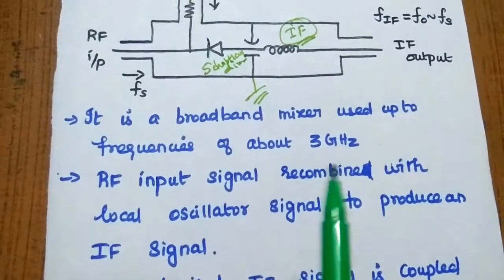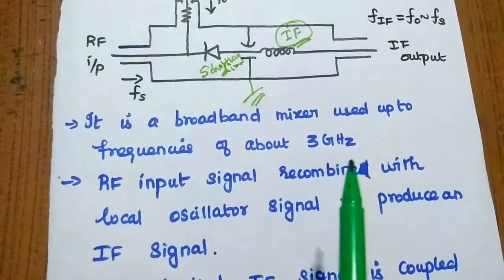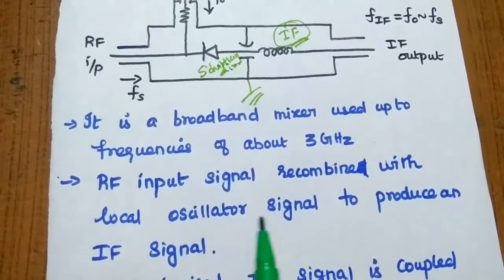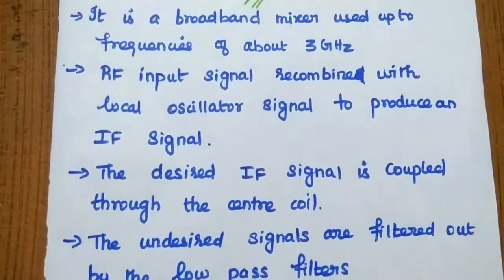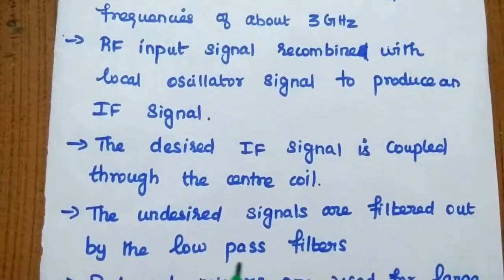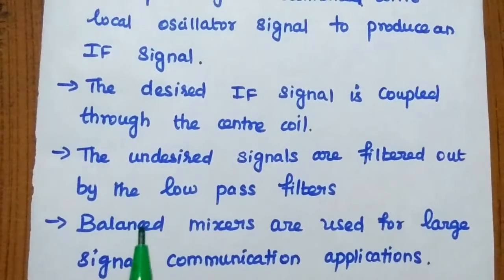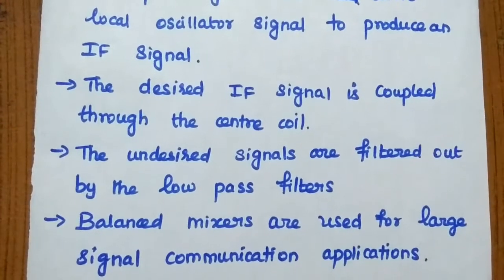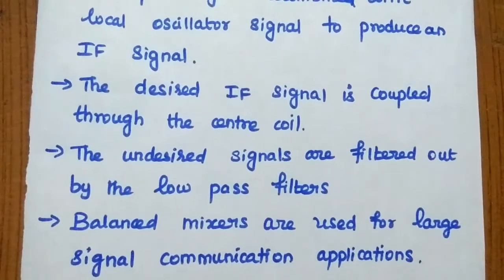It is a broadband mixer used up to frequencies above 3 GHz. RF input signal recombines with the local oscillator signal to produce an IF signal. The desired IF signal is coupled through the center coil and desired signals are filtered out by the low pass filters. These types of balanced mixers are widely used for large signal communication like continuous wave radar system.